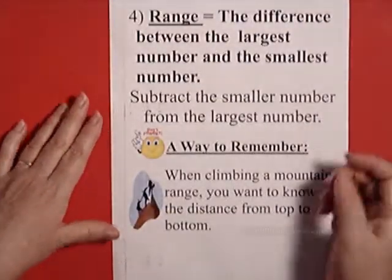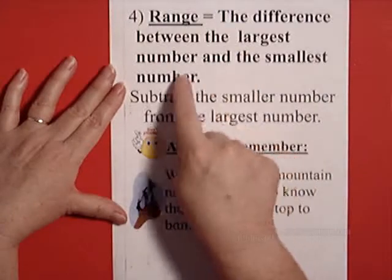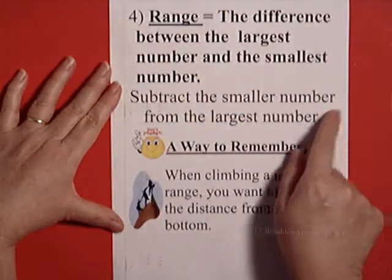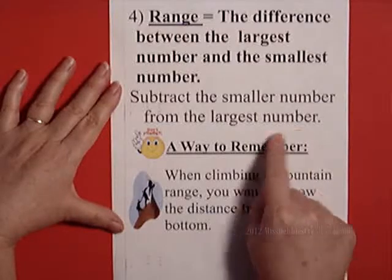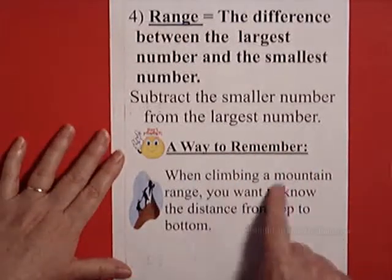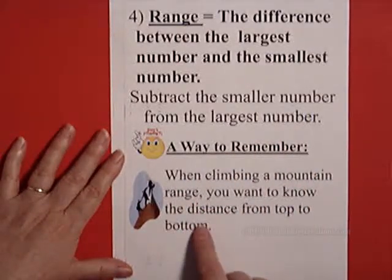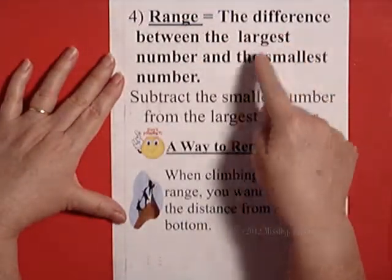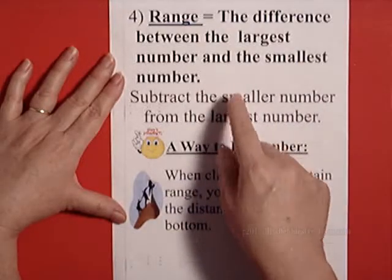The last one is range. The difference between the largest number and the smallest number. All you need to do is subtract the smaller number from the largest number. A way to remember is when climbing a mountain range, you want to know the distance from top to bottom. So range means the difference between the largest number and the smallest number.